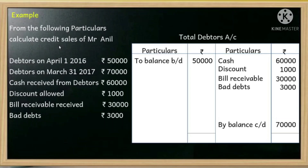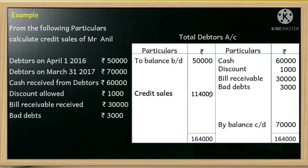Credit sales during the year — we need to balance: 1,64,000. The balancing figure is 1,14,000, which represents credit sales during the year. The total debtors account is prepared for incomplete records to calculate credit sales, which goes into the trading and profit and loss account.